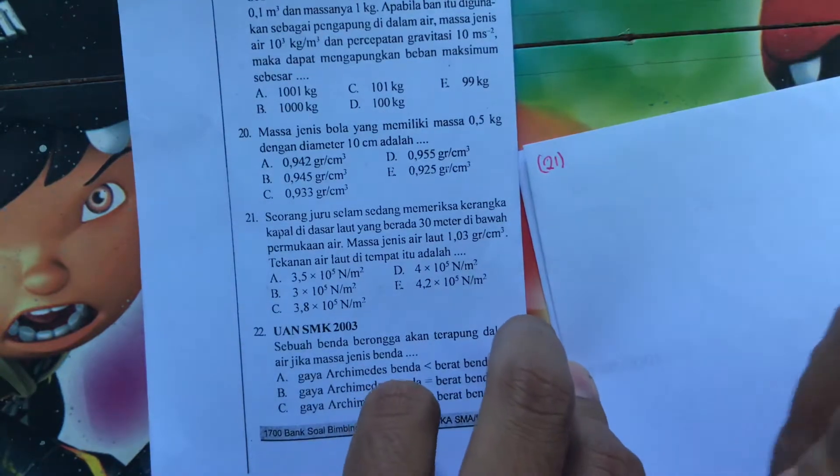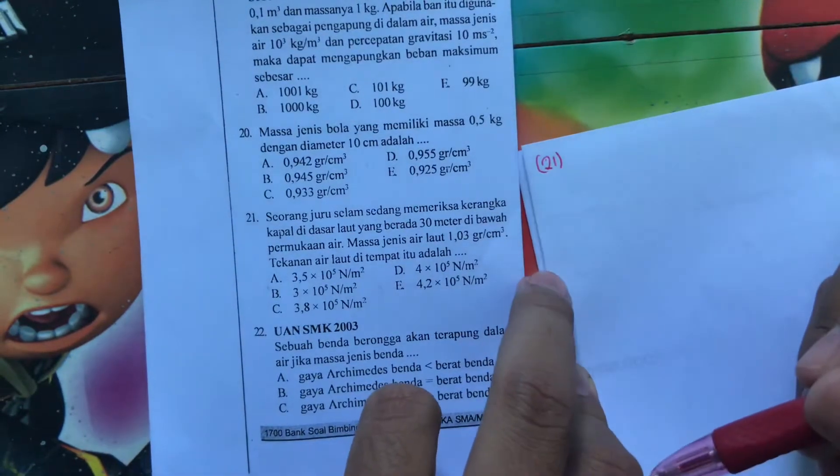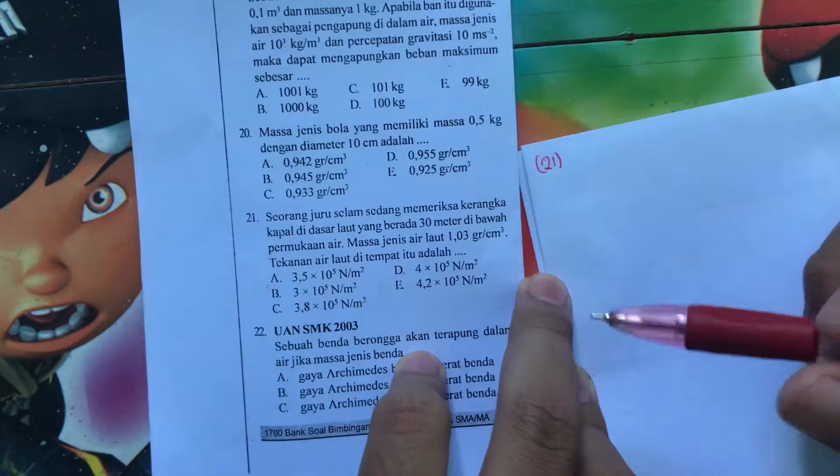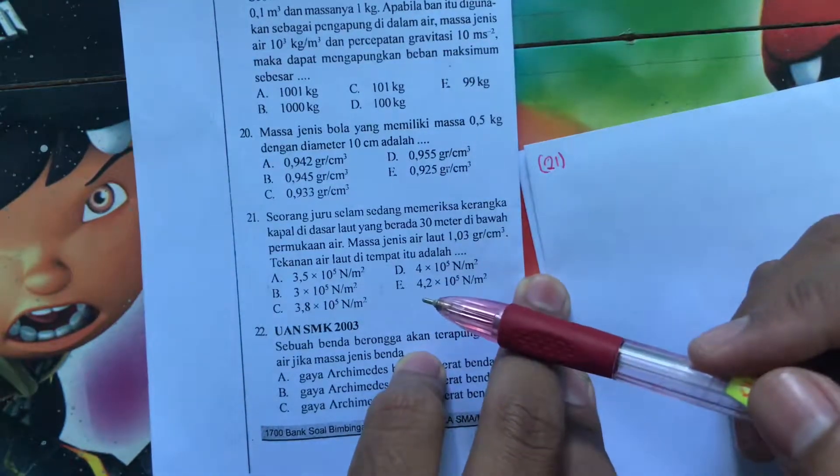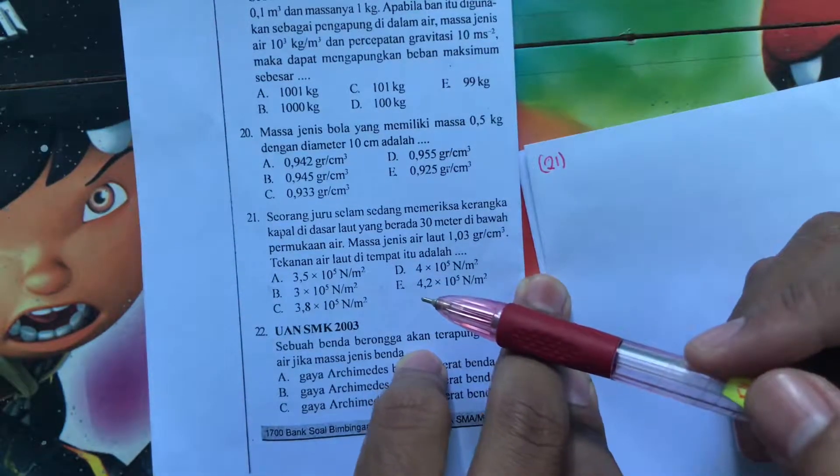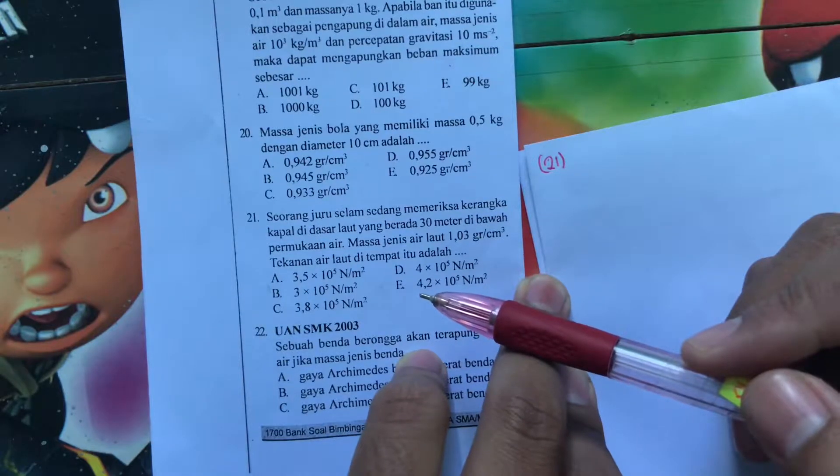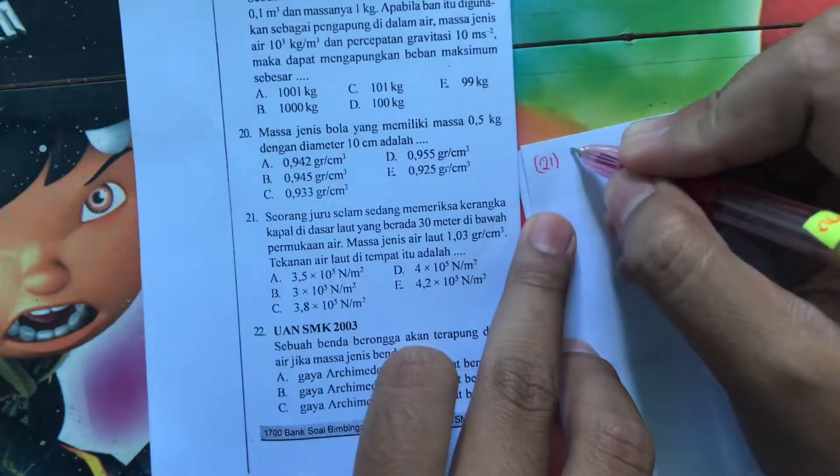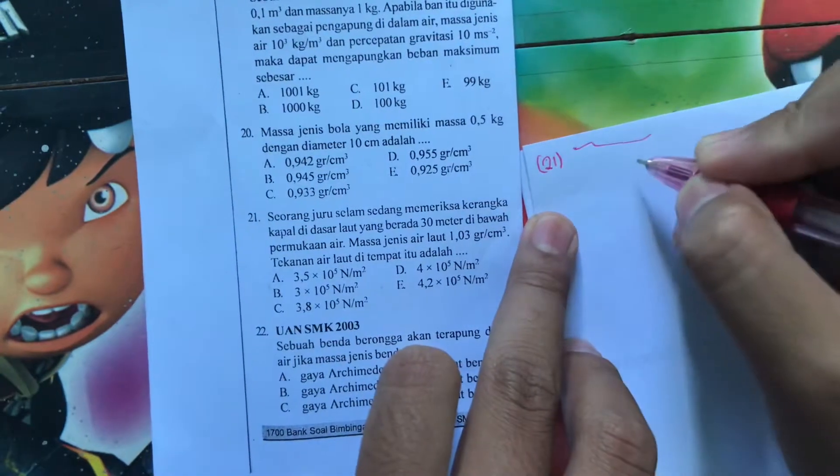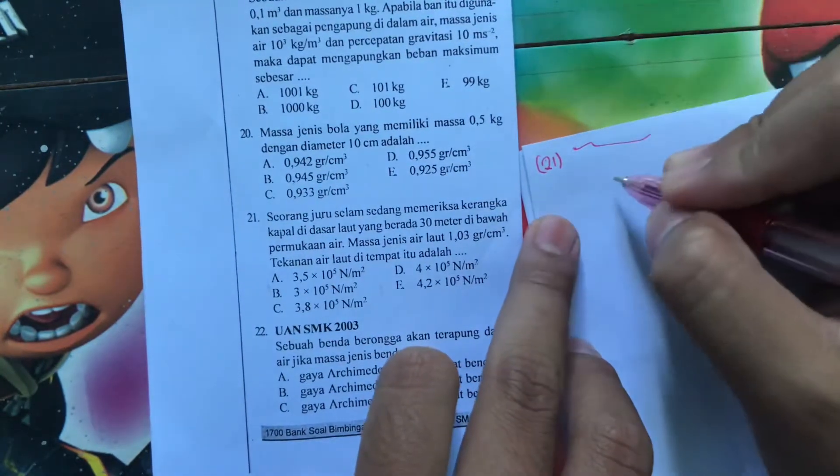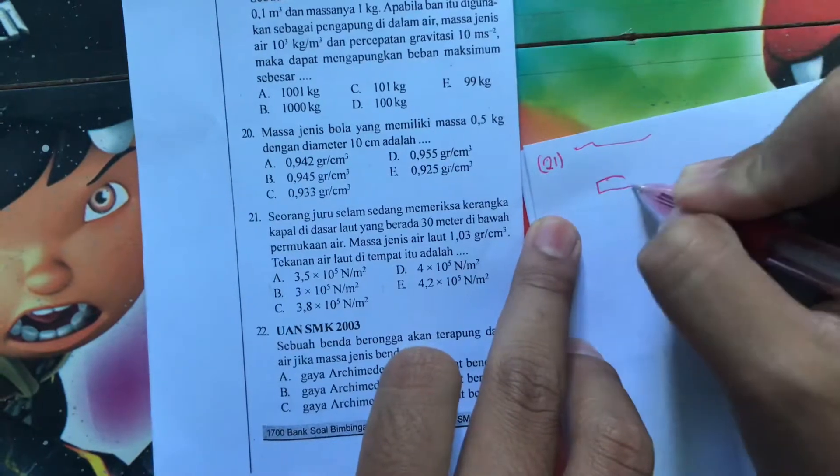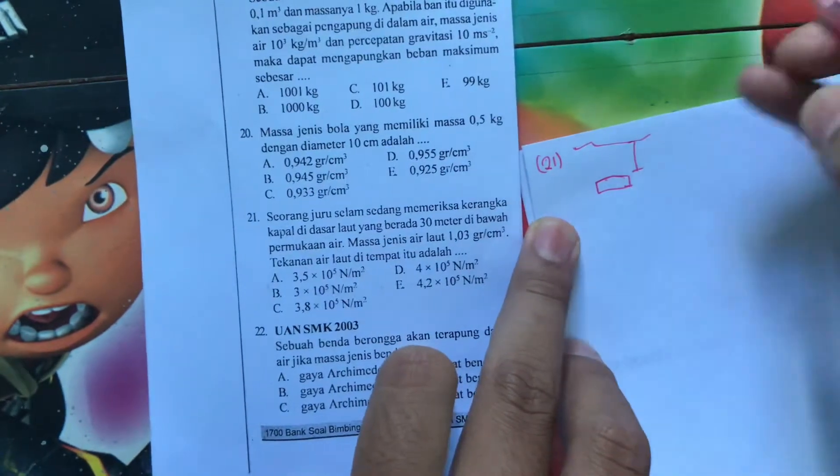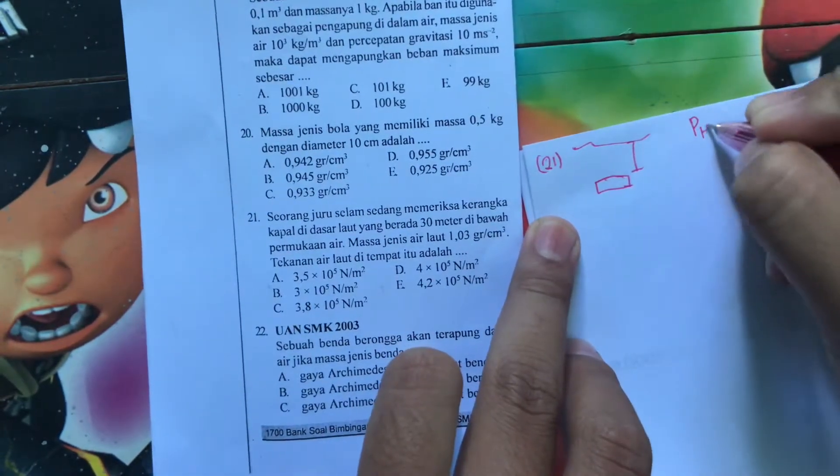Seorang juruselam sedang memeriksa rangka kapal di dasar laut yang berada 30 meter di bawah permukaan air. Masa jenis air laut 1,03 gram per cm kubik. Tekanan air laut di tempat itu adalah. Nah, ini berarti kita ngomongin tekanan hidrostatis.